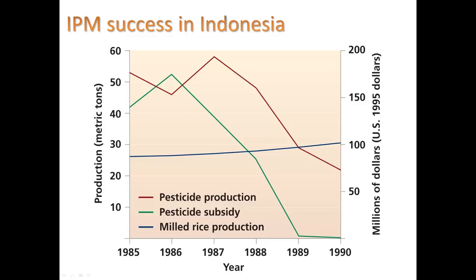One example of the success of this approach comes from Indonesia. In the mid-1980s, there was heavy pesticide use — shown in red — and the government was subsidizing companies to develop pesticides at cheap rates. Over just the next five years, pesticide production declined, subsidies declined, and the rice yield actually increased. This drop in pesticide subsidy also represented a savings of tax dollars.